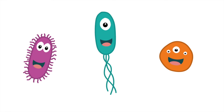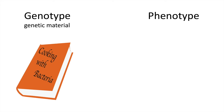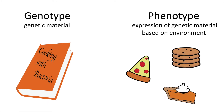When we study bacteria, we can focus on genotype and phenotype. The genotype is the genetic material. We can think of a genotype like a cookbook with recipes for a bunch of foods. The phenotype is the expression of the genetic material based on the environment, like the dishes made from the cookbook which depends on the ingredients you have.